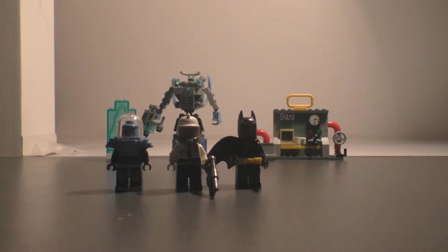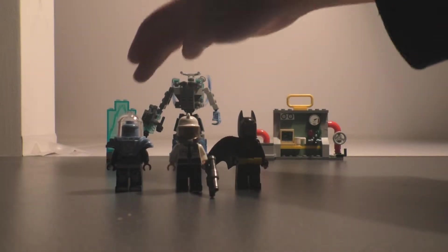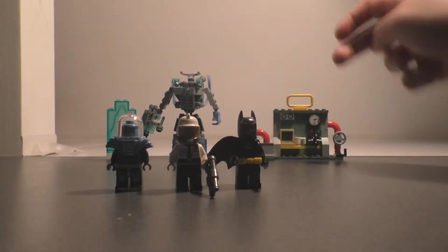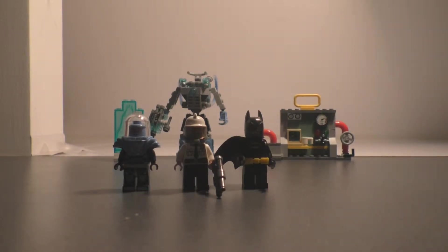This is a 2017 set, number 70901. It has three minifigures, one ice piece, one Batman, and one fireplace.